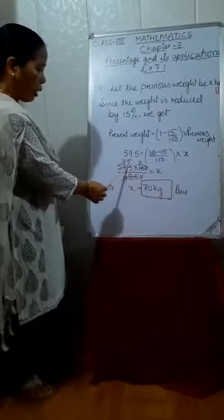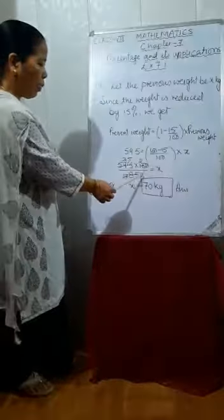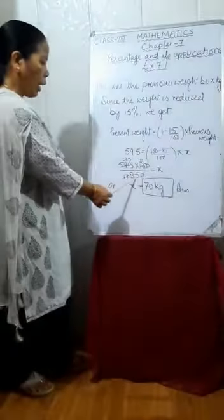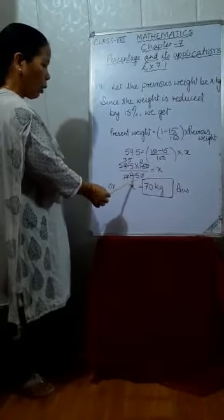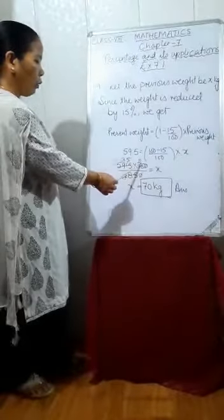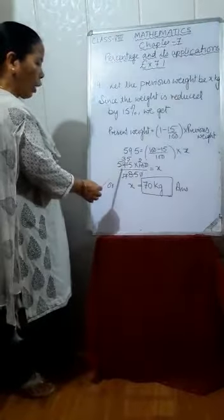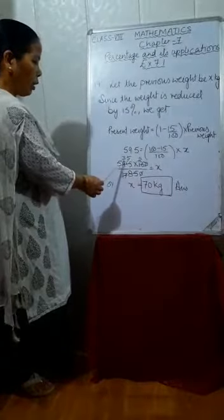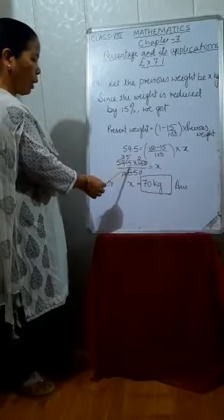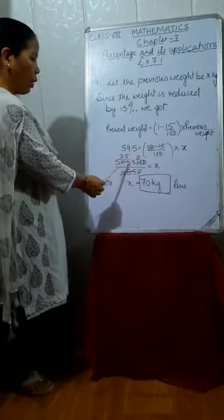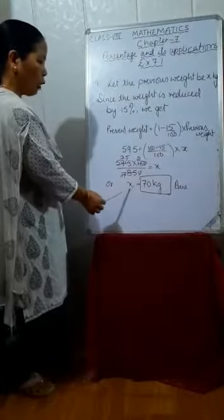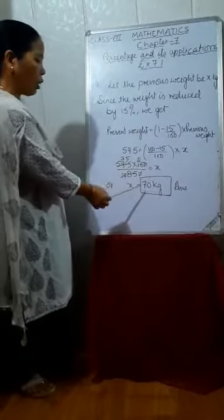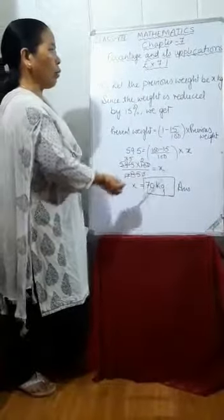Solving the equation: x equals 59.5 multiplied by 100 divided by 85. Removing the decimal gives 595 multiplied by 100 divided by 850. Cancelling 10 from numerator and denominator, and then dividing 85 by 5 gives 17, and 10 by 5 gives 2. Dividing 595 by 17 gives 35, and 35 multiplied by 2 equals 70 kg. So the previous weight of the girl was 70 kg.